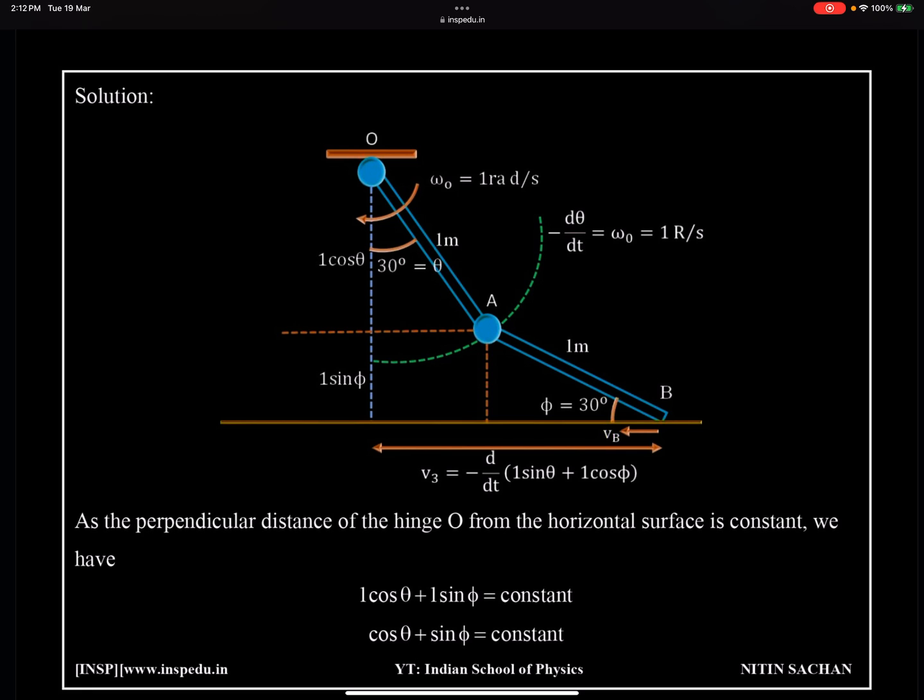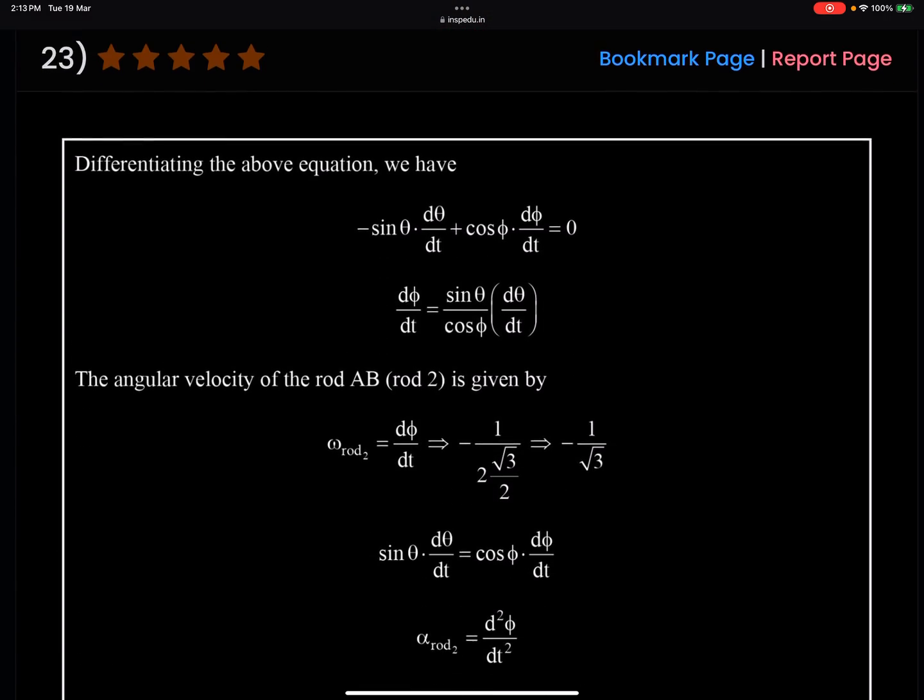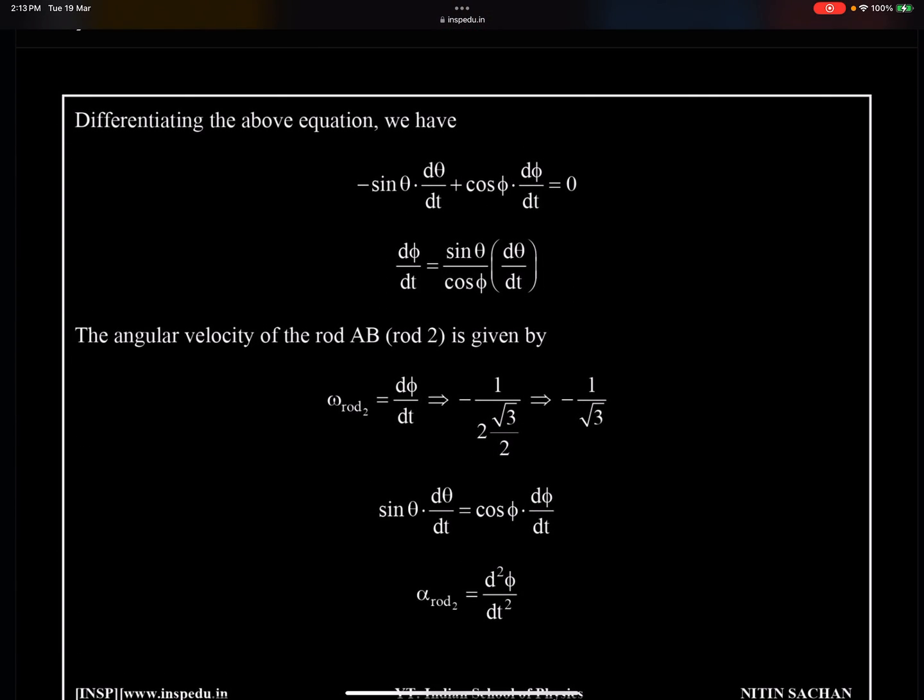dφ/dt will be related to omega of rod 2 and dθ/dt will be related to omega of rod 1. So when we differentiate this, we are having minus sin theta dθ/dt and plus cos phi dφ/dt. So from here dφ/dt value we are getting which is sin theta over cos phi times dθ/dt. Which is if we substitute the values, we know theta value, we know phi value at this instant and we know dθ/dt which is omega of rod 1.